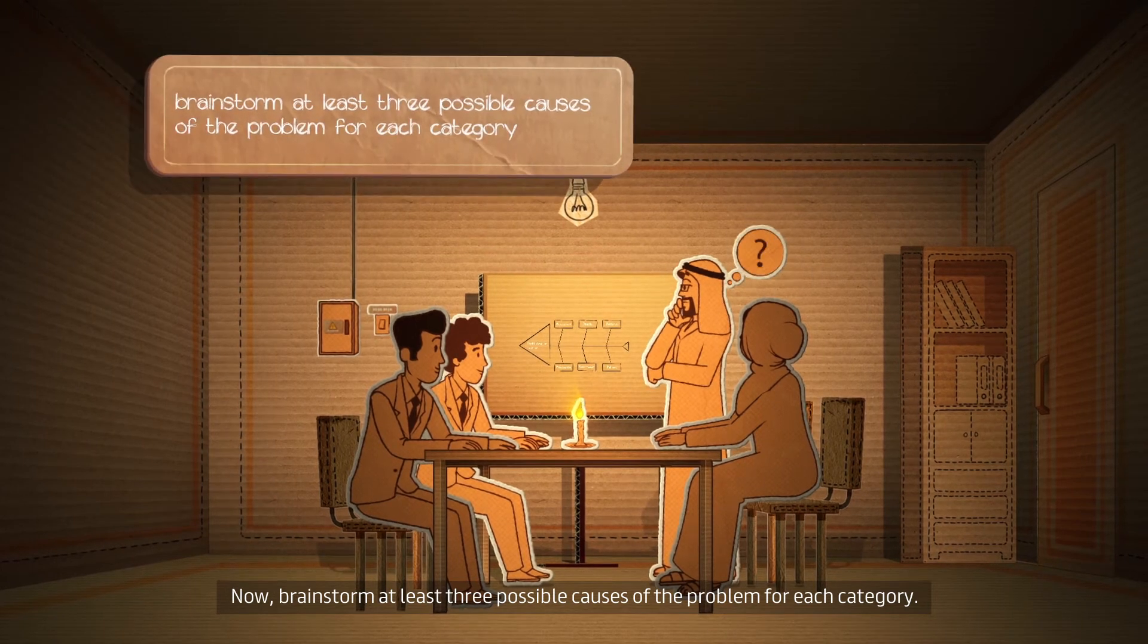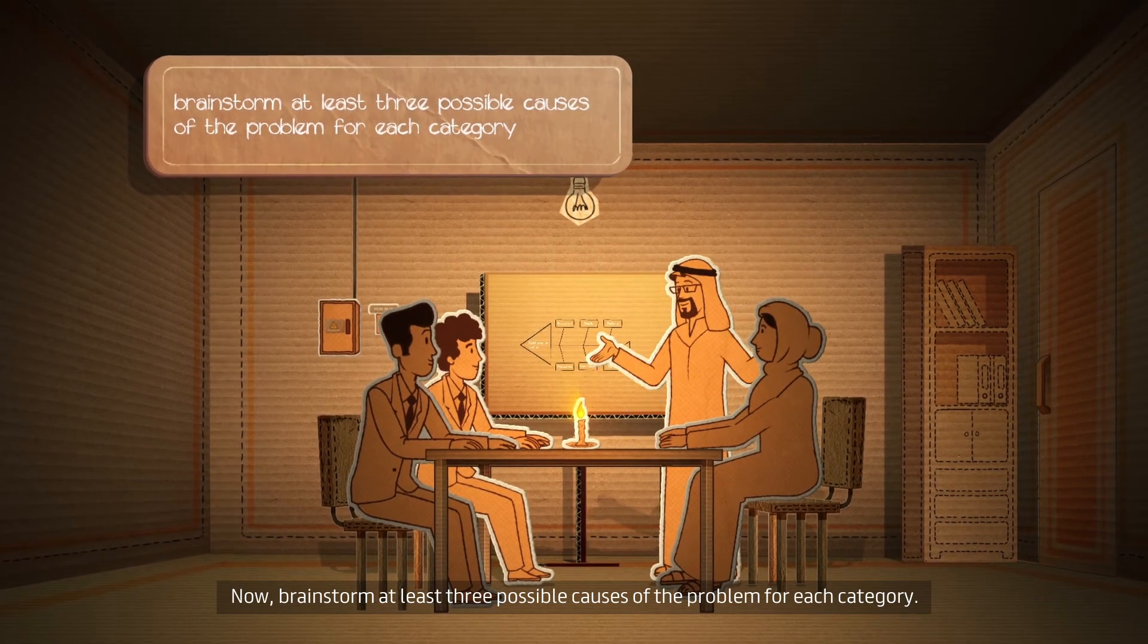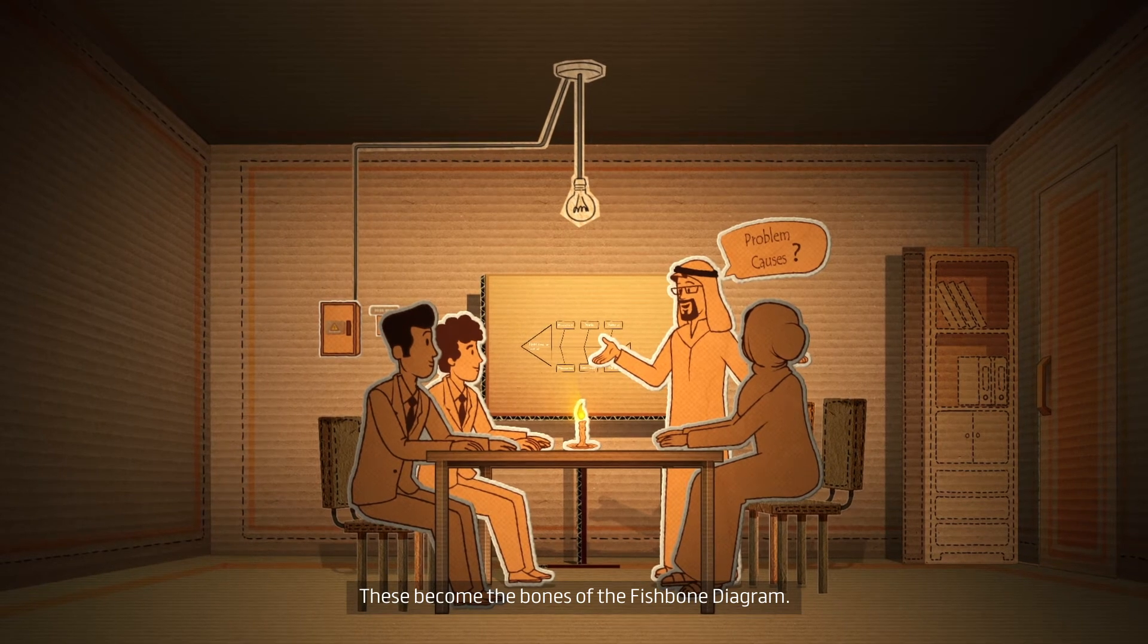Now, brainstorm at least three possible causes of the problem for each category. These become the bones of the fishbone diagram.